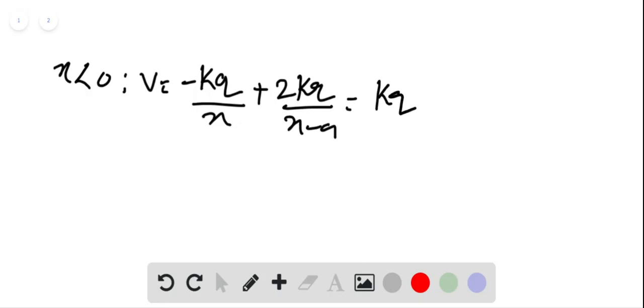For x less than 0, we will have minus kq divided by x plus 2kq divided by x minus A. This is equal to kq times (x plus A) divided by x into x minus A.